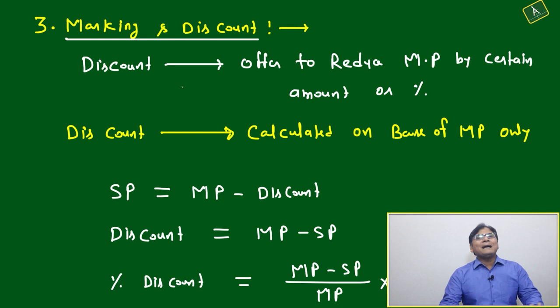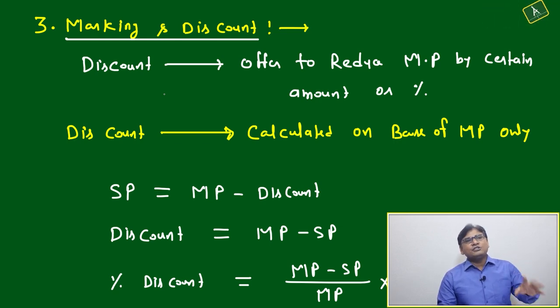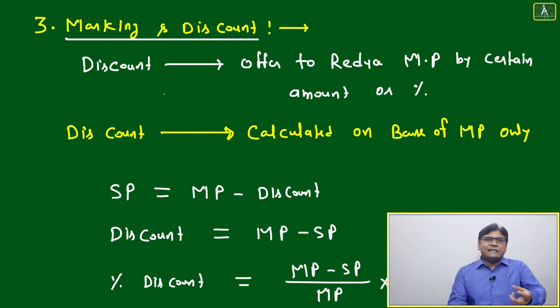Let's discuss marked price and discount. What is marking? Marking is when, after determining the cost price, you decide on a price which you want to put as a labeling price or list price that you want to mark on that particular item. Your intention is to sell at this price. You'll just check the market if it is selling at this price.